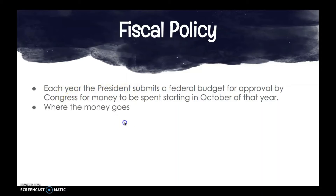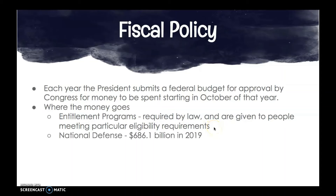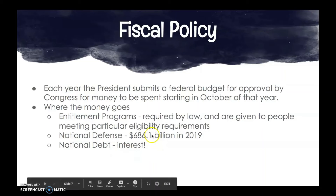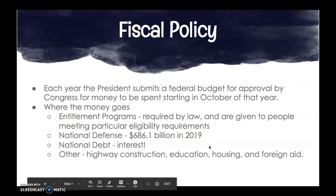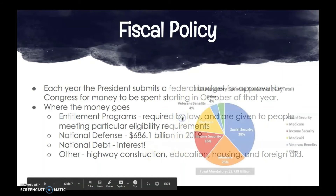Where does this money go? It goes toward entitlement programs required by law, like Social Security, given to people meeting eligibility requirements. It also goes toward national defense — in 2019 we spent $686.1 billion on national defense. We also pay interest on the national debt, and fund other items like highway construction, education, housing, and foreign aid.